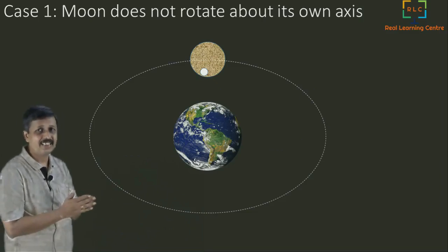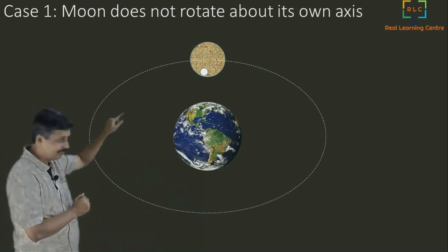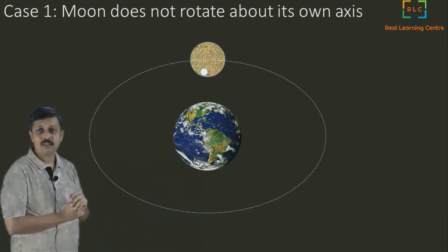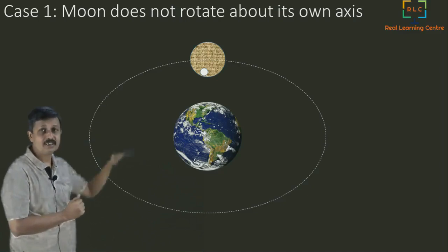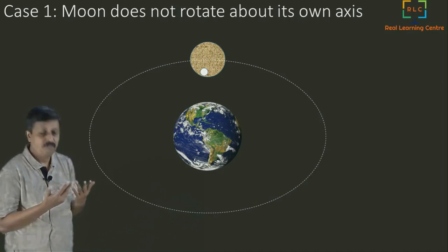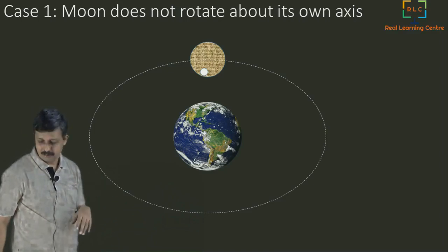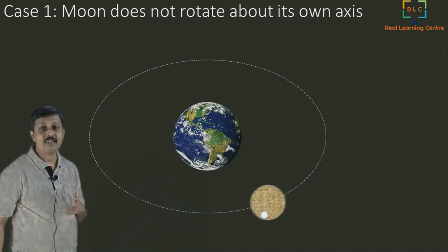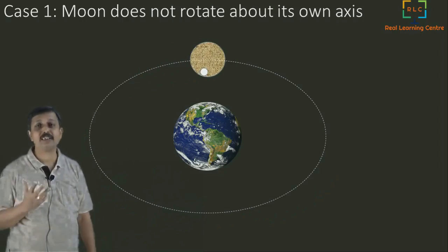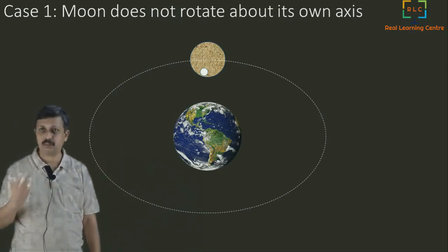To understand case one — moon does not rotate — I have drawn the Earth and the Moon with a dot on the moon's near side to indicate the side we see. If that dot is facing Earth, we see our familiar side. If the opposite side faces Earth, our assumption breaks down. When the moon travels to the other side of the Earth without rotating, you would already be seeing the other side. Since that does not happen, the theory that the moon does not rotate is wrong.